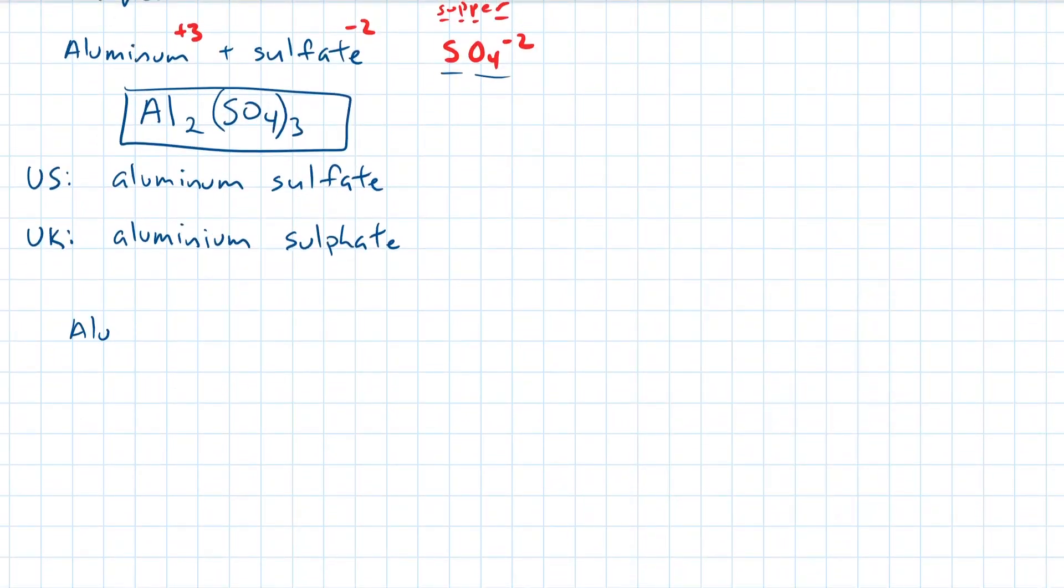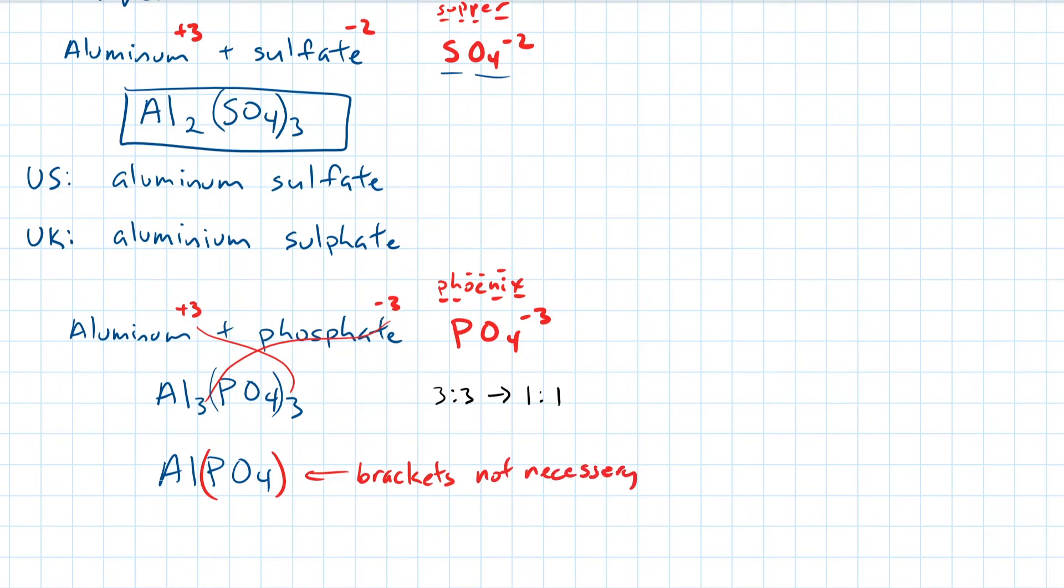Next example, aluminum and phosphate. This second example might seem very similar to the first example, but I included this to show you things to watch out for. Aluminum still has a charge of positive three, and phosphate? Well, Phoenix has four consonants and three vowels. After you apply the crossover rule, you end up with Al3PO43. The first thing is that you need brackets around the PO4 to remind the reader that there are three sets of phosphates. The second thing to watch out for is that this is clearly a 3 to 3 ratio, so it can be reduced down to a 1 to 1 ratio. Writing down AlPO4 is sufficient for the final answer. You could place brackets around the PO4 for clarity, however, all chemists will understand PO4 as aluminum phosphate.